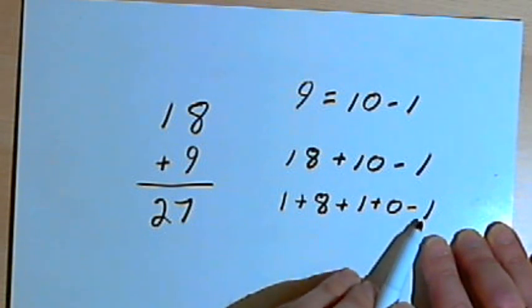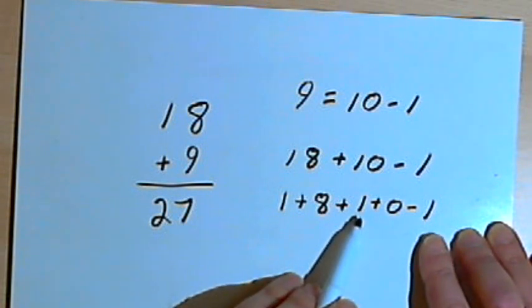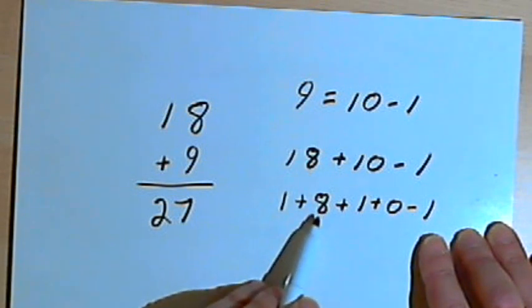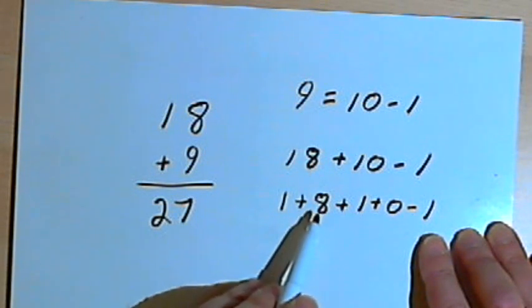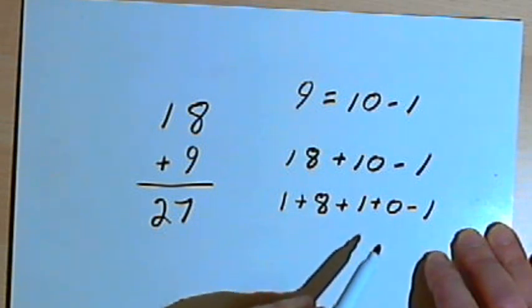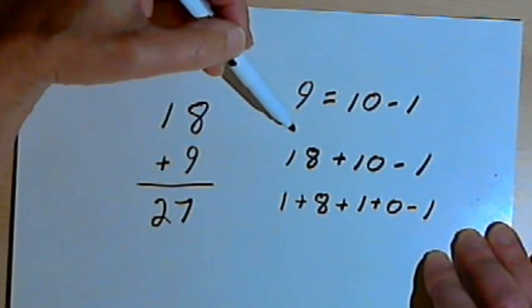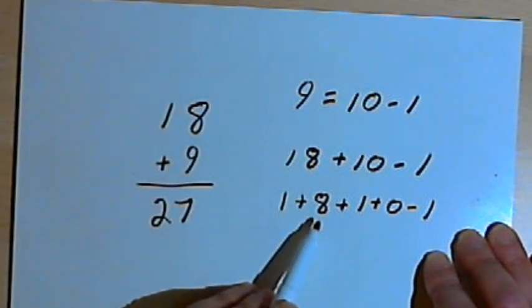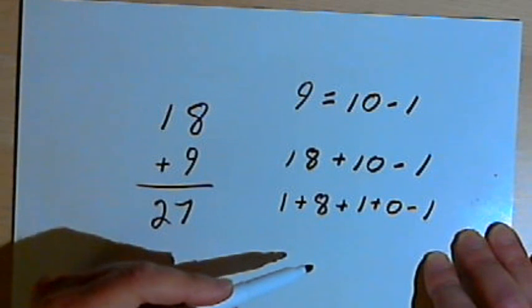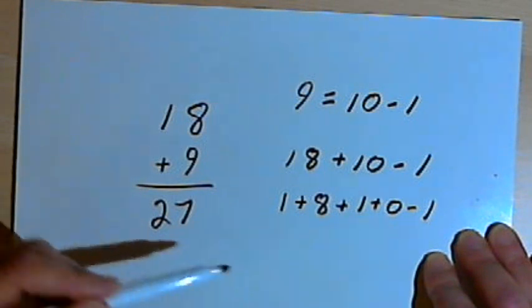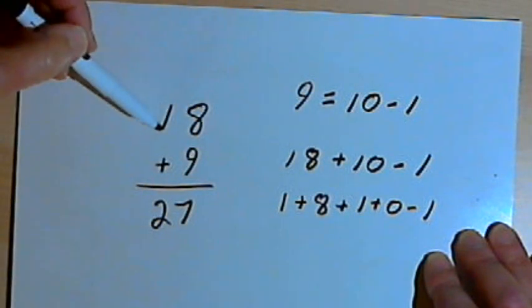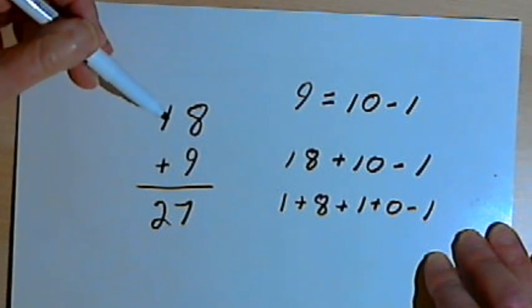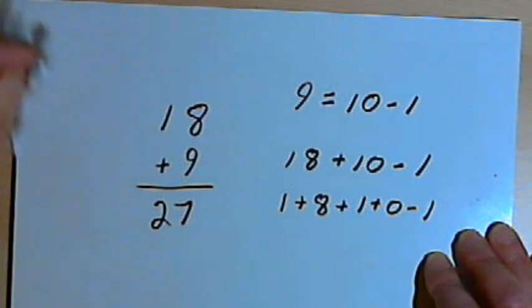Well adding a 1, adding a 0, and subtracting a 1 is the same as doing nothing. So if my original number had its digits add up to 9, then my next number, the next multiple of 9, is also going to have its digits add up to 9. And this will keep going and going. So that's the reason that this trick works, that you can add all the digits and see if the result you get is divisible by 9.